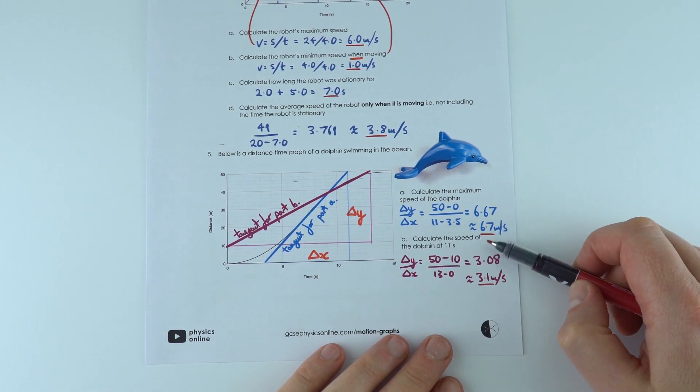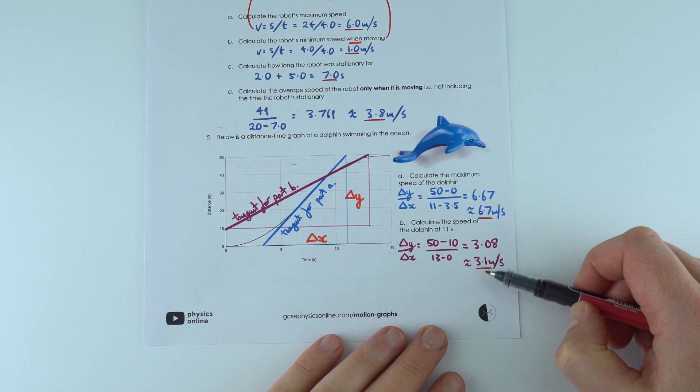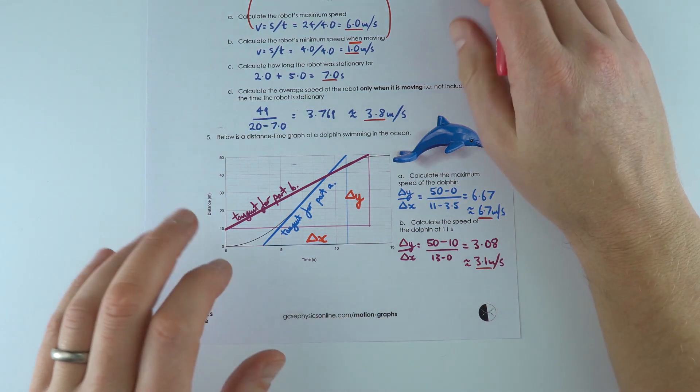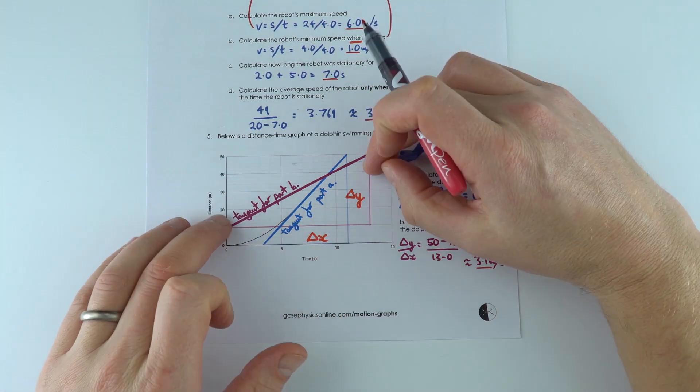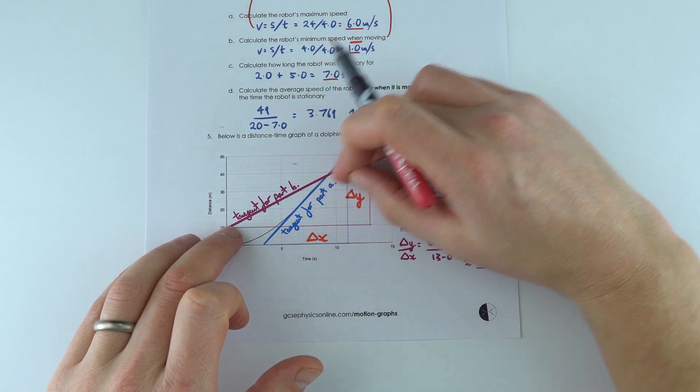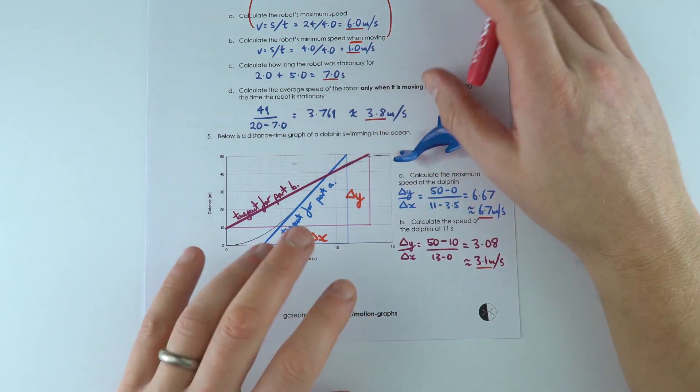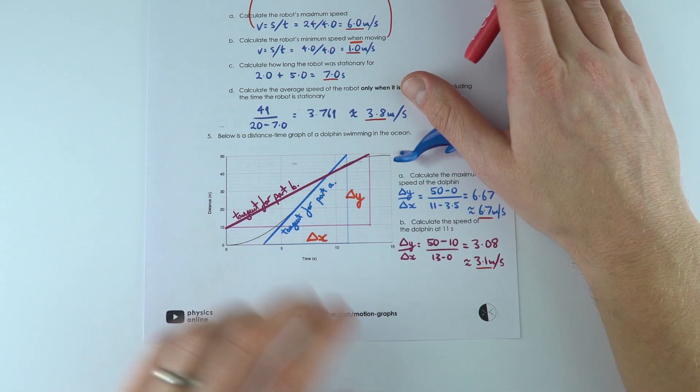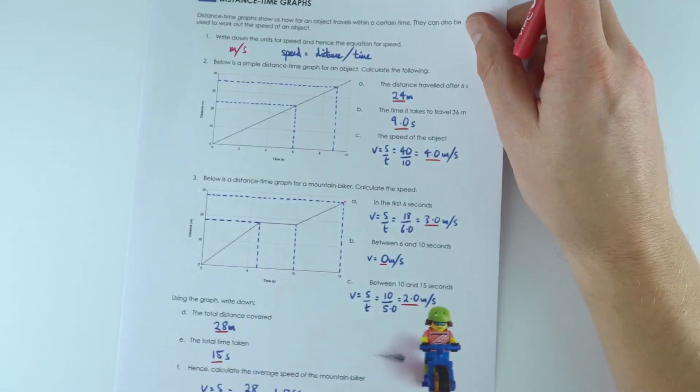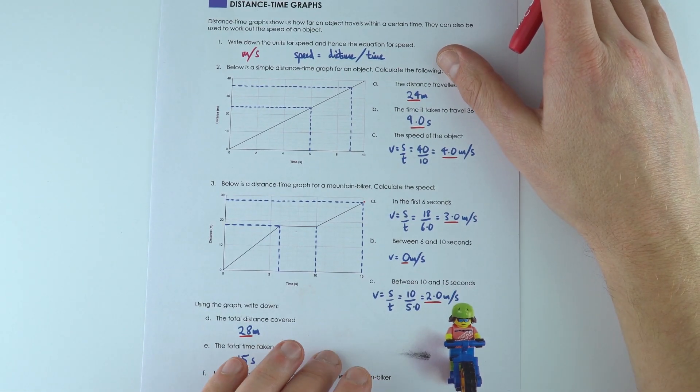I mean, you could have had an answer between sort of 6.4 and 7.1 or something, or between sort of 2.8 and 3.4. But it's about you judging which is a good tangent to draw to that curved part of the line to find out the speed at that particular time. So those were some questions just looking at distance-time graphs.